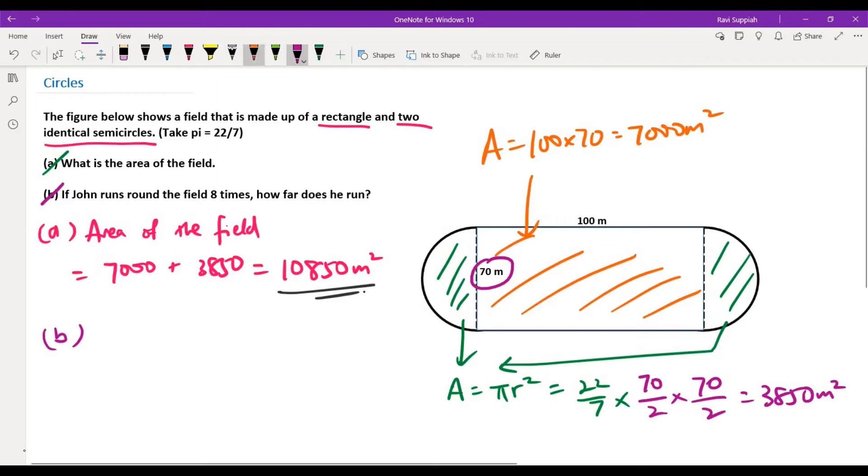So that one round will consist of these two lengths of the field and the two semicircle portion of these two halves. Let's look at the total distance that he will cover.